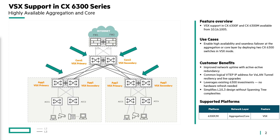Key outcomes for customers include higher availability through active-active forwarding, rapid recovery, and live upgrades with minimal traffic impact. There is a smaller failure domain than VSF stacking because each switch retains its own control plane, investment protection by enabling HA on existing 6300F and 6300M models, and simplified L2 and L3 designs with reduced spanning tree complexity.